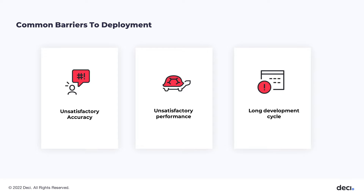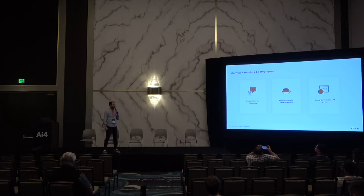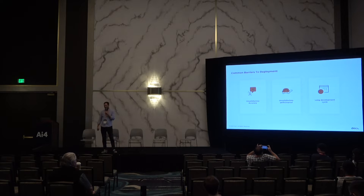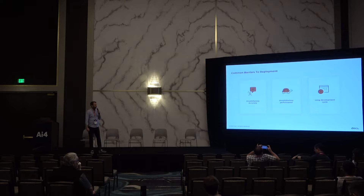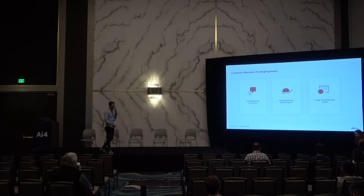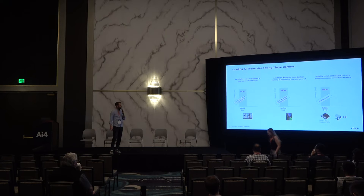Usually the common barriers are unsatisfactory accuracy — where we don't have enough data, or the data is not clean enough and we can't get to the right accuracy — and unsatisfactory performance, where we use models that are too large and heavy for the production environment. The combination of those two brings us to long development cycles that prolong and delay timelines of R&D projects.